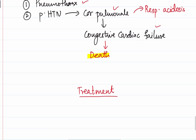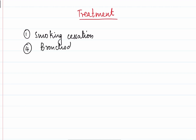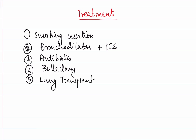Treatment begins with smoking cessation. To improve airflow and relieve obstruction, long-acting bronchodilators with inhaled corticosteroids are given. Antibiotics are used if infections are present. If bullae are present, bulectomy is performed. In severe cases, lung transplantation or lung volume reduction surgery may be required.